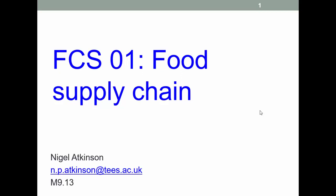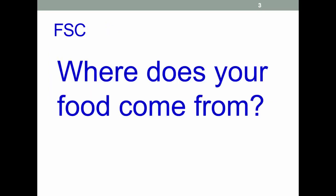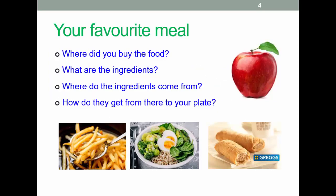This is lecture one, video one of semester two on food supply chains, which will be broken into two parts. We'll start by thinking about where your food comes from, then address the issue that a lot of our food comes from a relatively small number of crops. We'll talk about the food supply chain and expand on that in the second part of this lecture and probably later in the module as well.